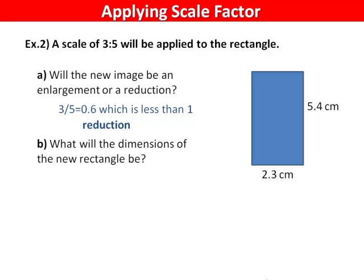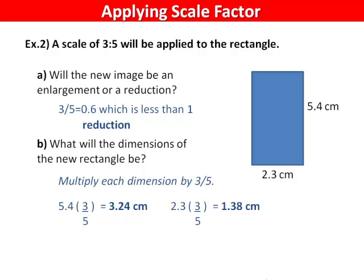Part B reads, what will the dimensions of the new rectangle be? To find the new dimensions, multiply by the scale factor. Five decimal four times three fifths is three decimal two four, and two point three times three fifths is one point three eight.